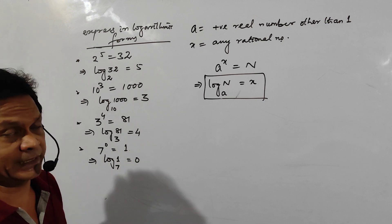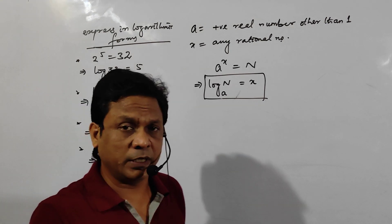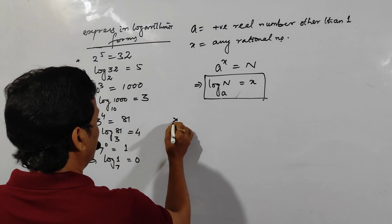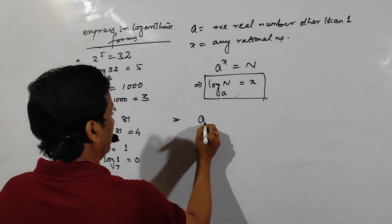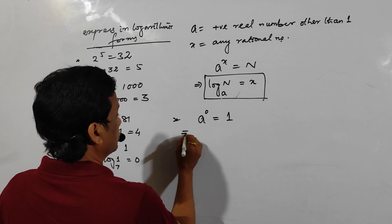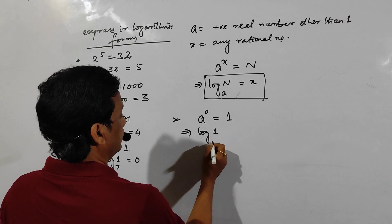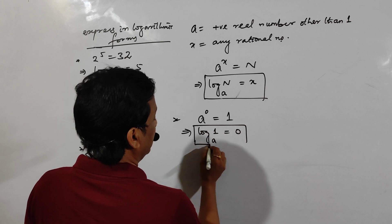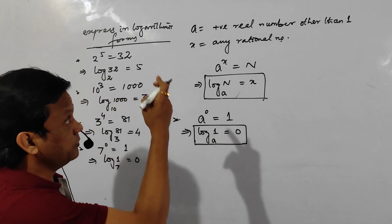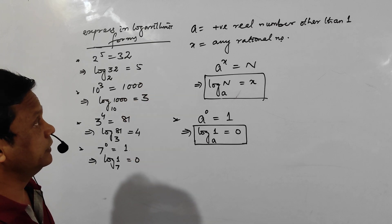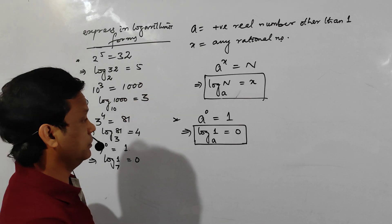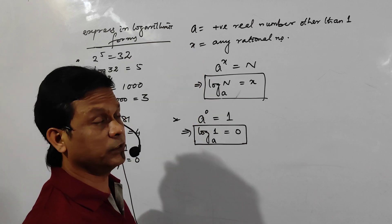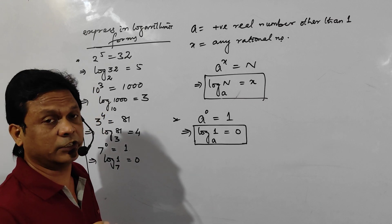That means log of 1 to any base is equal to 0. Because a^0 = 1, it implies log of 1 to the base a is equal to 0. Here 'a' is any positive real number other than 1 — the base cannot be negative.